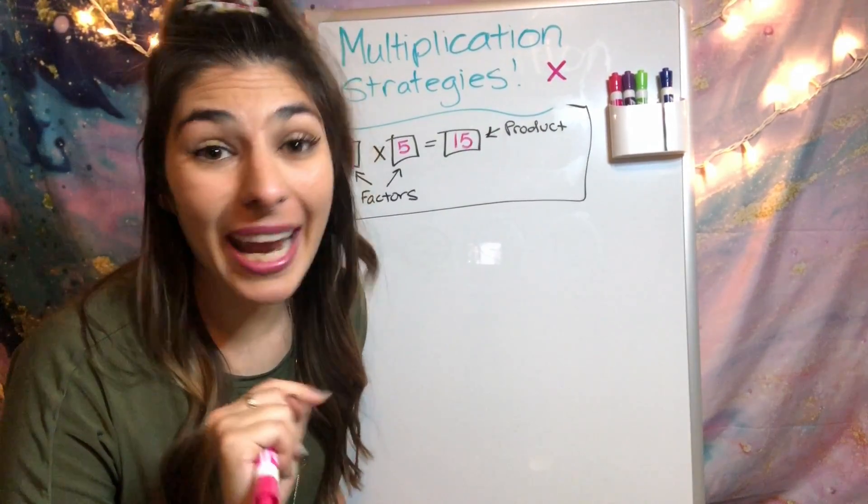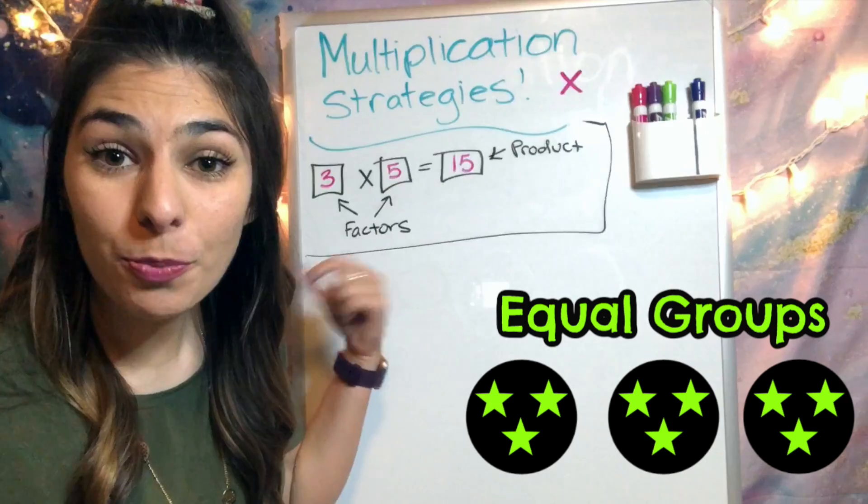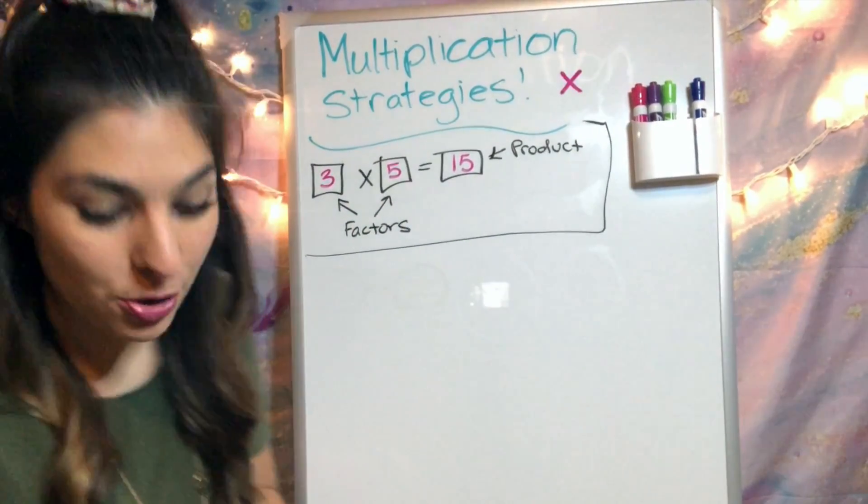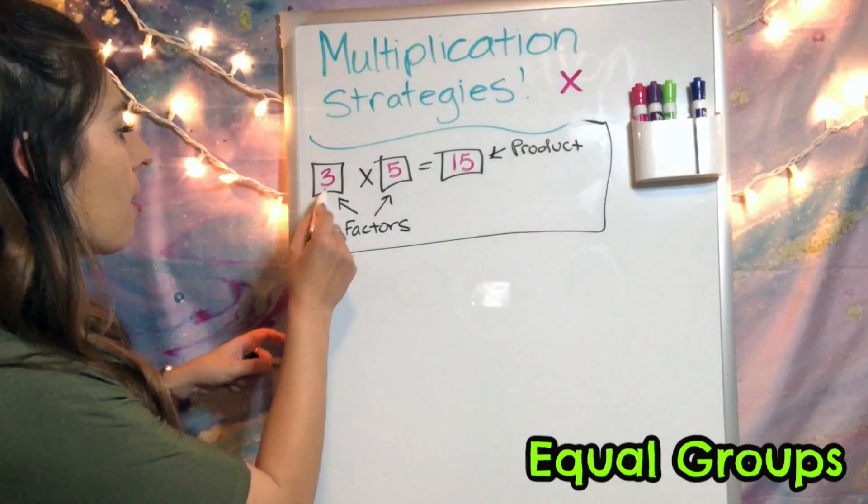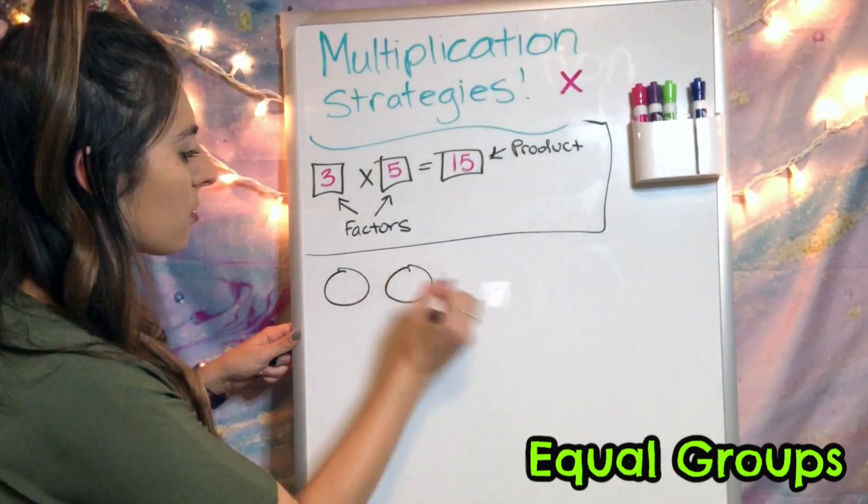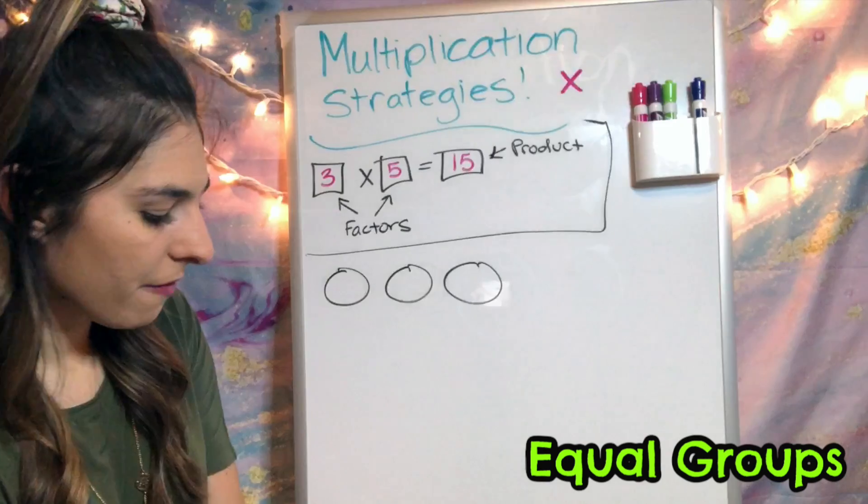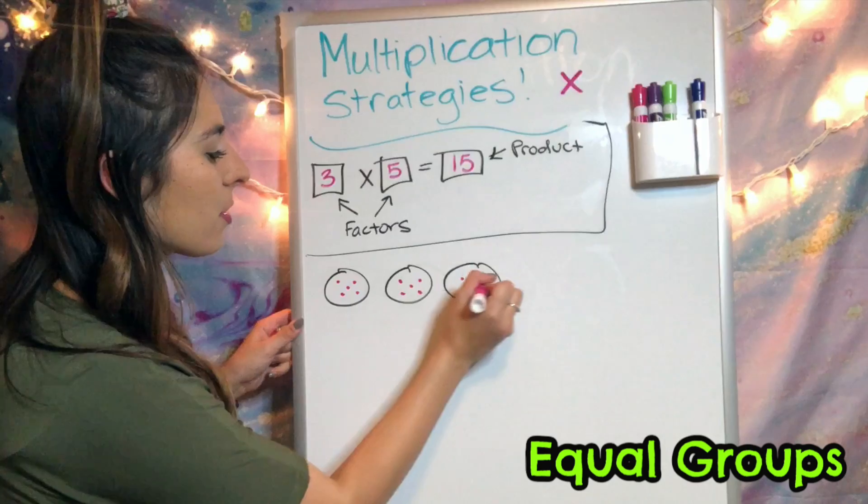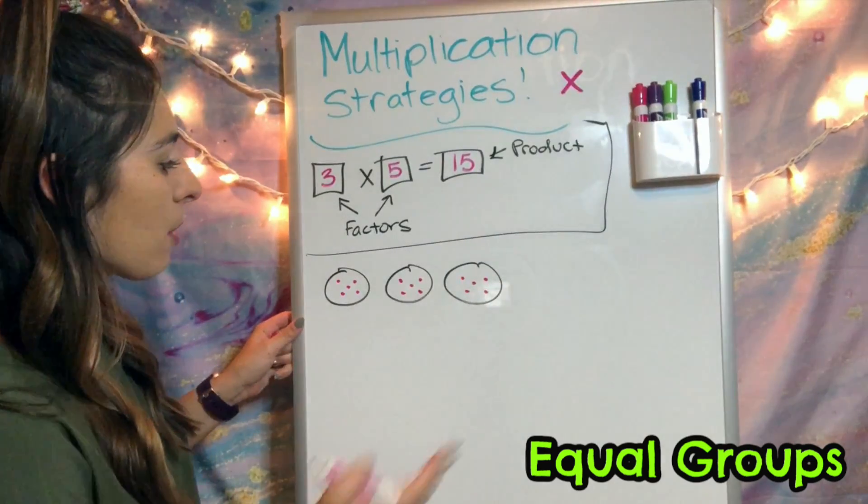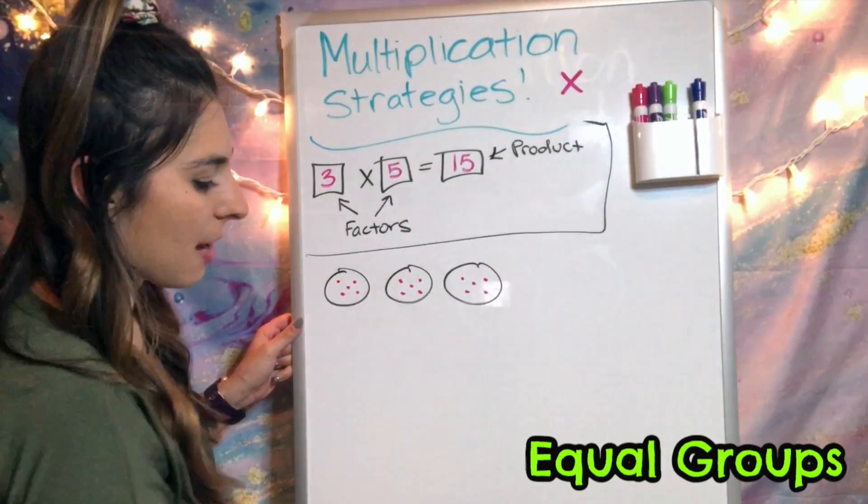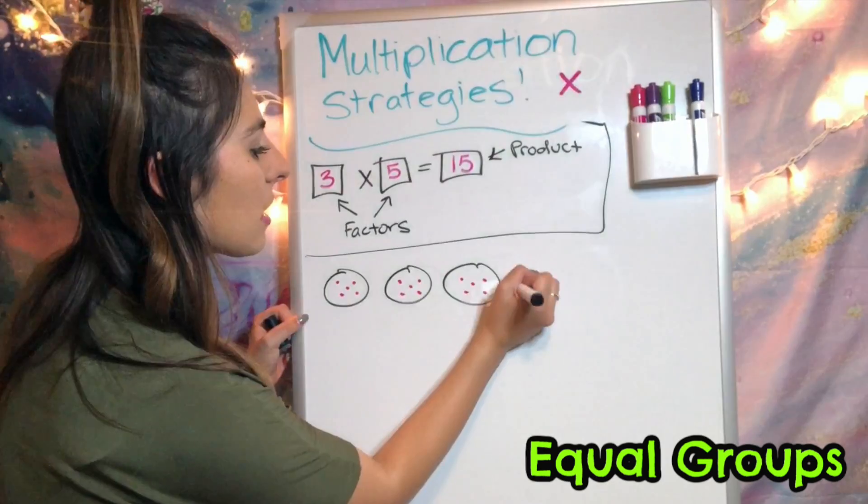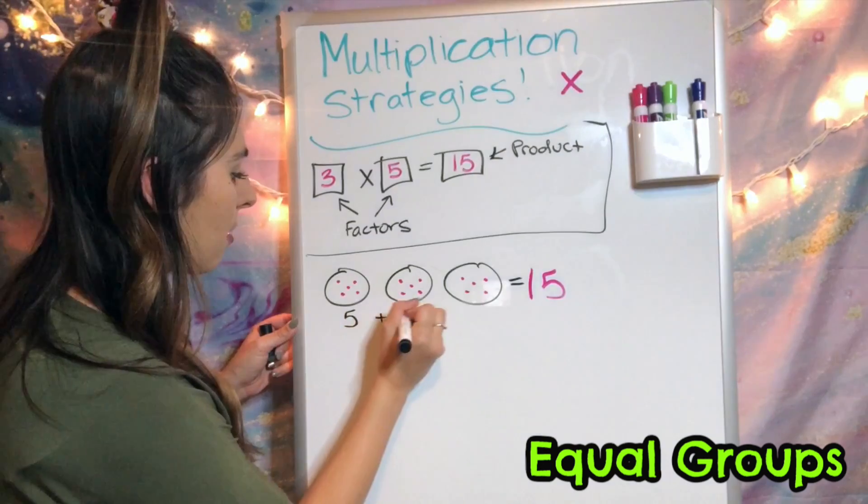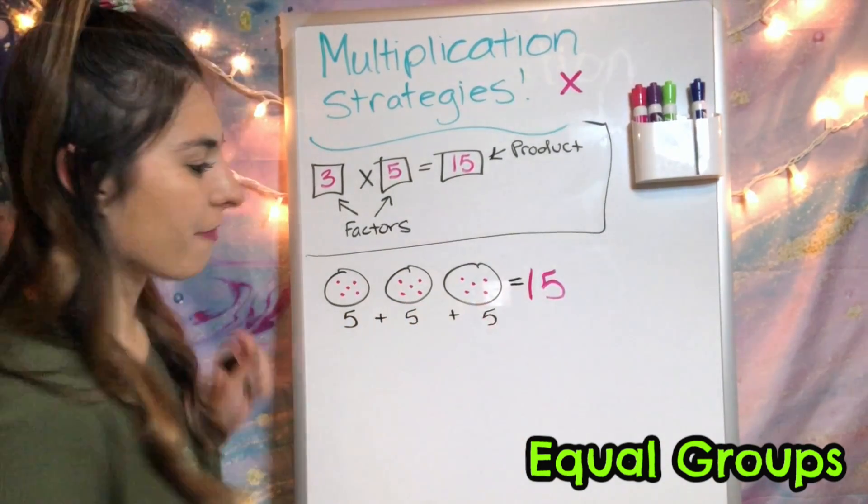The first multiplication strategy and the most common is equal groups. So we're going to take these factors and break them down into equal groups. I'm going to have three circles, 1, 2, 3. Let's put 5 in each one, counting them out. And then I'm going to count all those dots up and find that that equals 15 because I have 5 plus 5 plus 5.